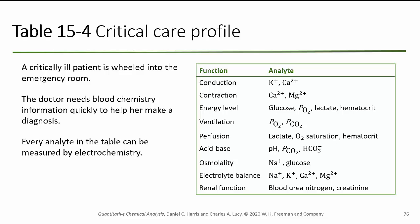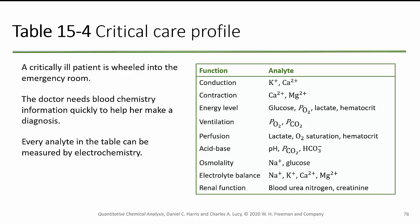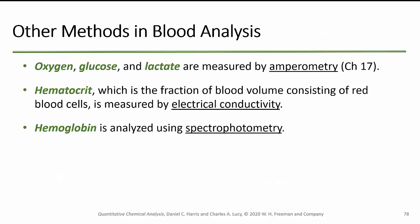How are we going to do this? Through the miracle of electrochemistry. In figure 15-22, the method of choice for determining different blood levels: you take your blood in, do a series of experiments, and with a reference electrode your blood goes out. We can look at different methods to determine different ions. Other ion selective electrodes can measure medicines in blood, such as heparin administered during surgery. Oxygen and lactate are measured by amperometry, covered in chapter 17. Hematocrit — the fraction of blood volume consisting of blood cells — is measured by electrical conductivity, and hemoglobin can be analyzed using spectrophotometry.